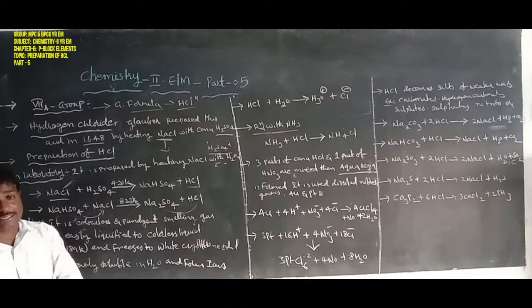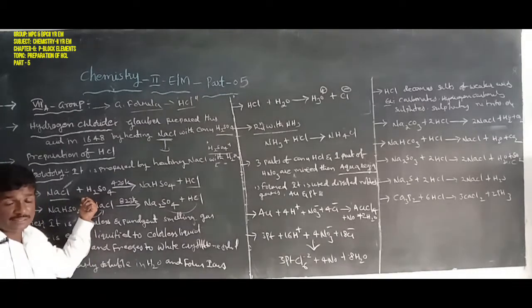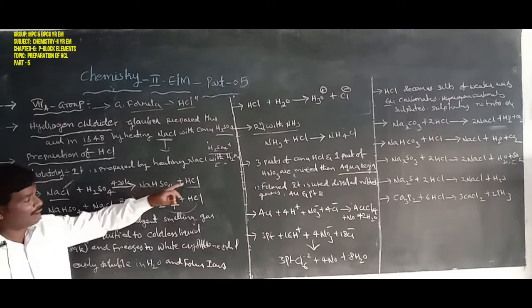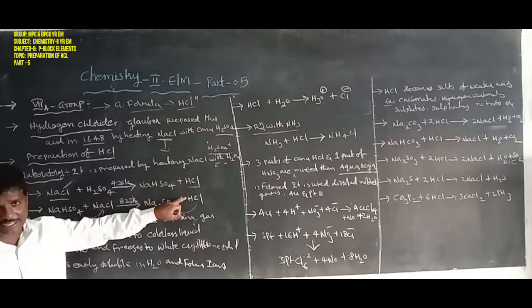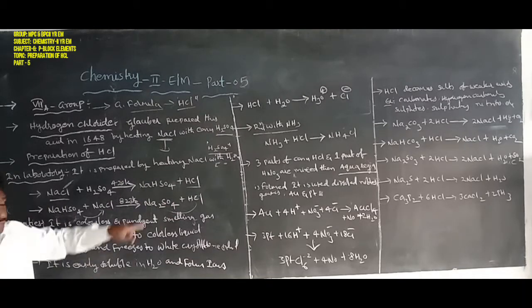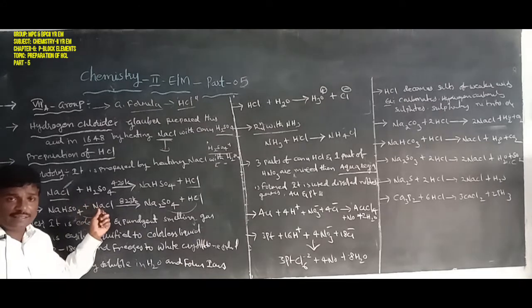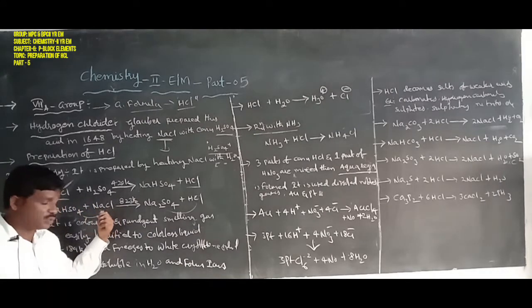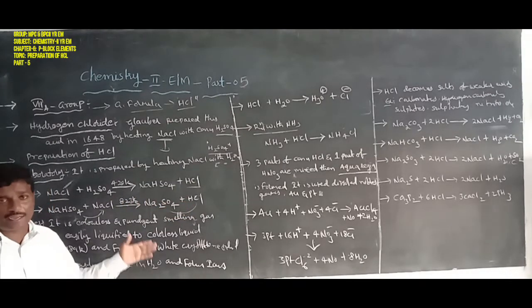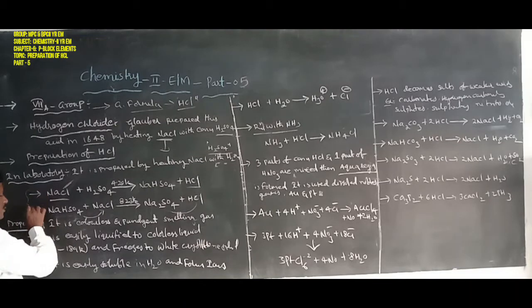Hydrochloric acid is prepared in two reactions in the laboratory method. In the first reaction, common salt heated with concentrated sulfuric acid at 420 Kelvin forms hydrogen chloride and sodium bisulfate. In the second reaction, sodium bisulfate heated with more sodium chloride at 823 Kelvin forms hydrogen chloride and sodium sulfate.